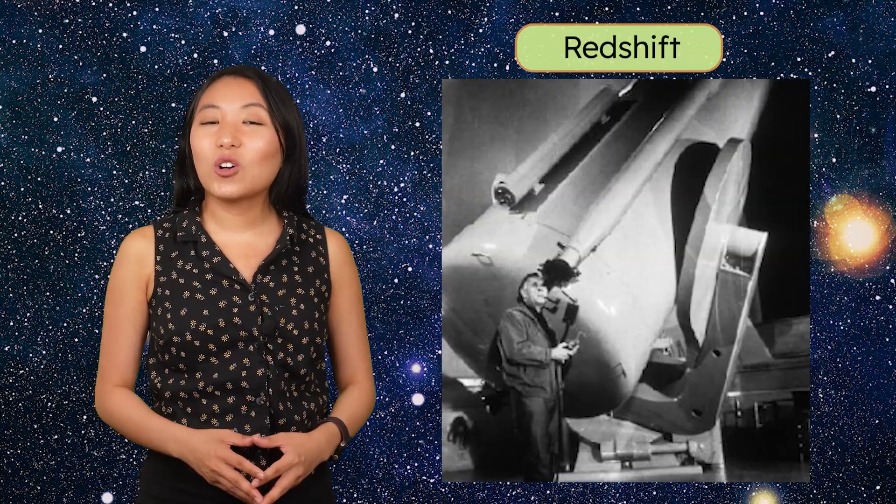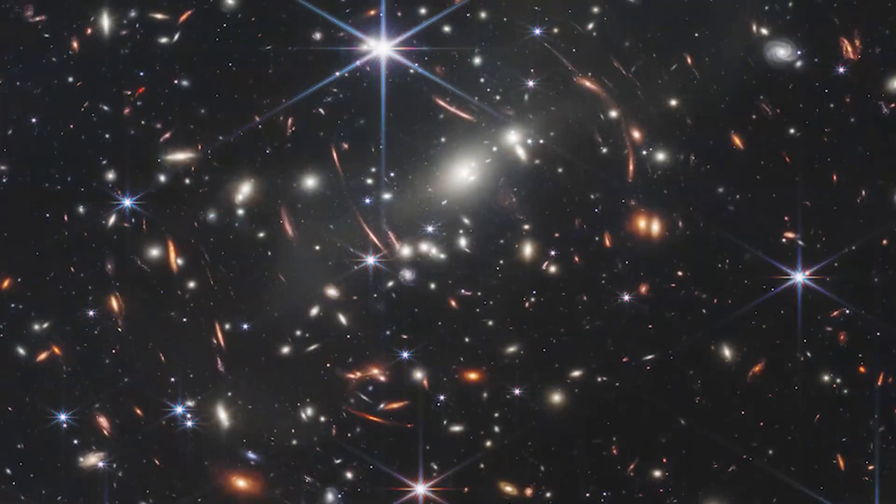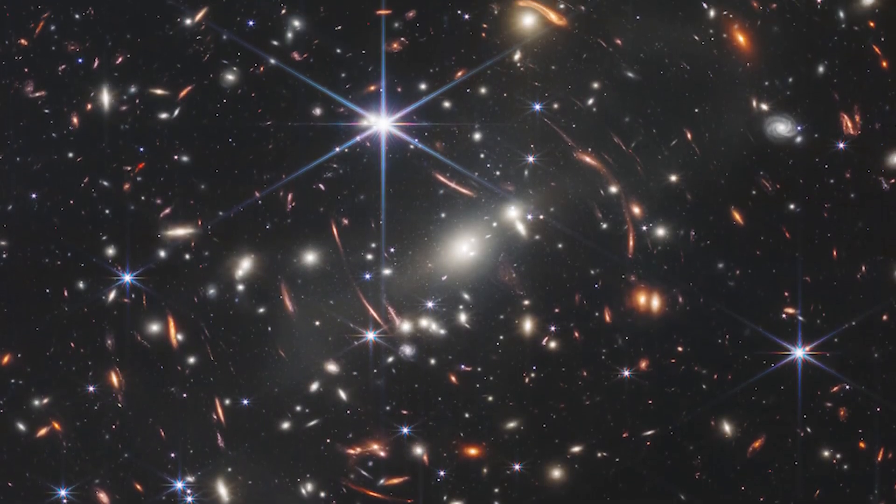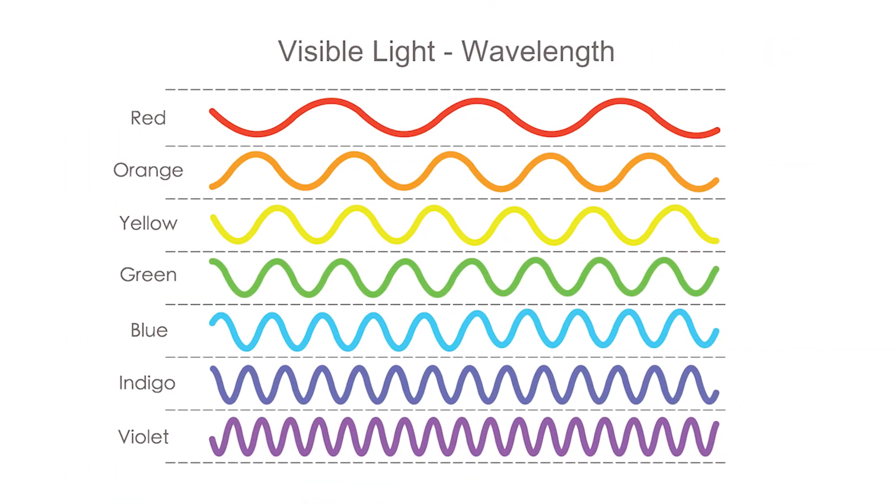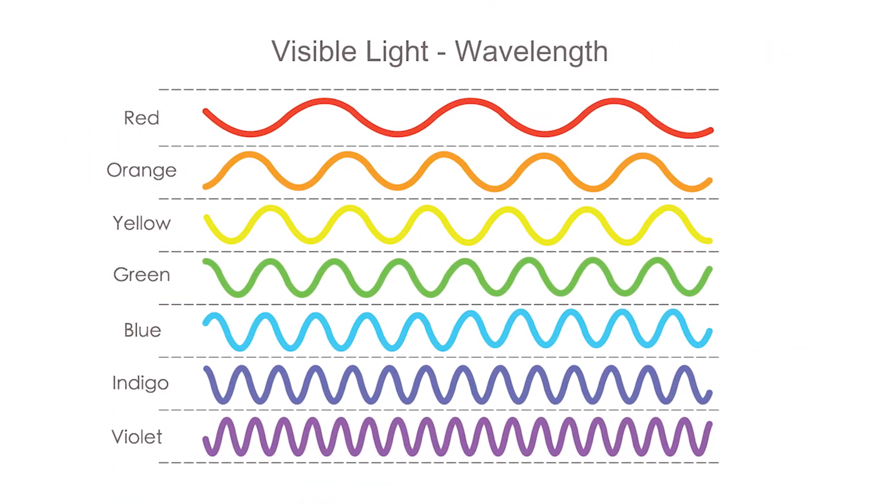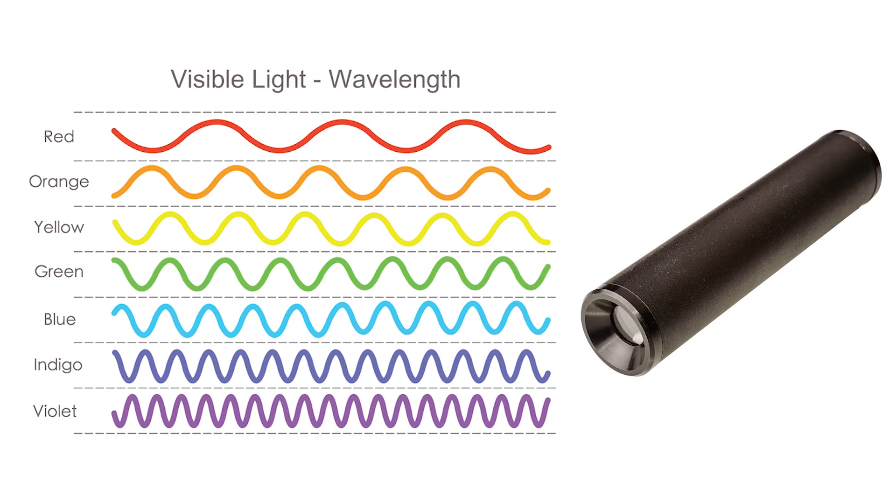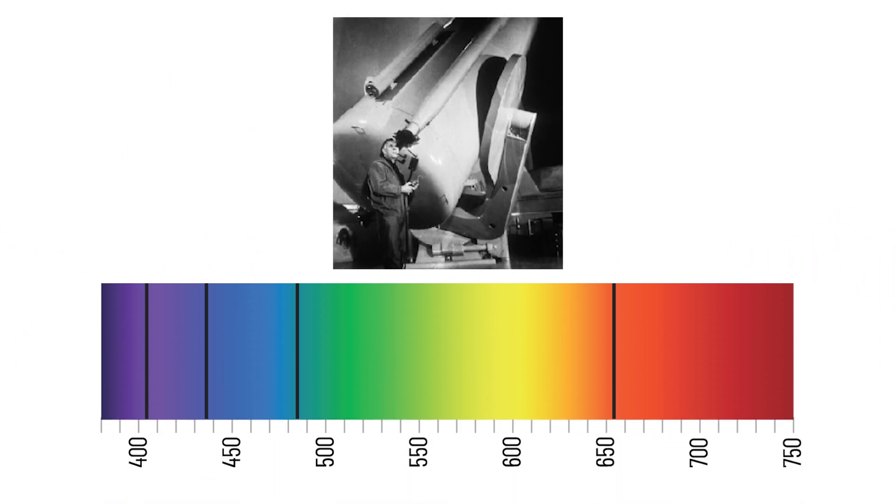Our balloon model shows the universe expanding, but how did scientists initially figure out that this was actually happening in the real universe? The answer lies in something called redshift. When we look at distant galaxies, we can study the light they send us. Light is made of many different colors, or wavelengths. When we pass that light through a tool called a spectroscope, we see a pattern of lines that act like a fingerprint for the elements in the galaxy. These lines normally appear in specific spots on the spectrum, but Hubble noticed something strange.